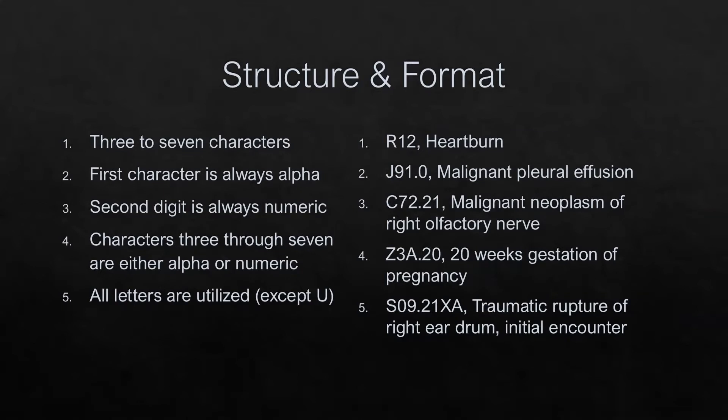Things to remember: the first character is always a letter. The second character is always a number. Characters 3 through 7 may either be numbers or letters, and all letters of the alphabet are used with the exception of U, which has been reserved for future expansion or updates of the ICD-10-CM code set.